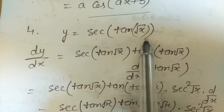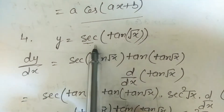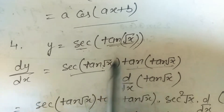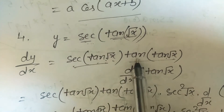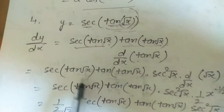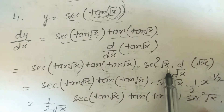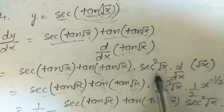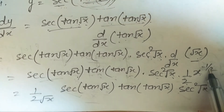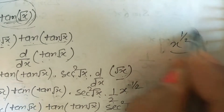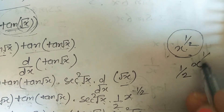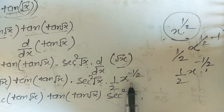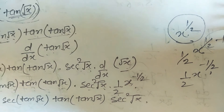Question 4: y = sec(tan√x). Using sec derivative = sec·tan, we get: sec(tan√x)·tan(tan√x) · d/dx(tan√x). Derivative of tan√x = sec²(√x) · d/dx(√x). Since √x = x^(1/2), its derivative is (1/2)x^(−1/2) = 1/(2√x). Final answer: sec(tan√x)·tan(tan√x)·sec²(√x)/(2√x).